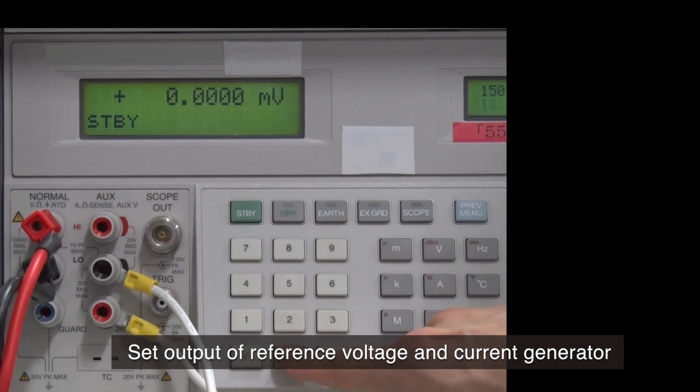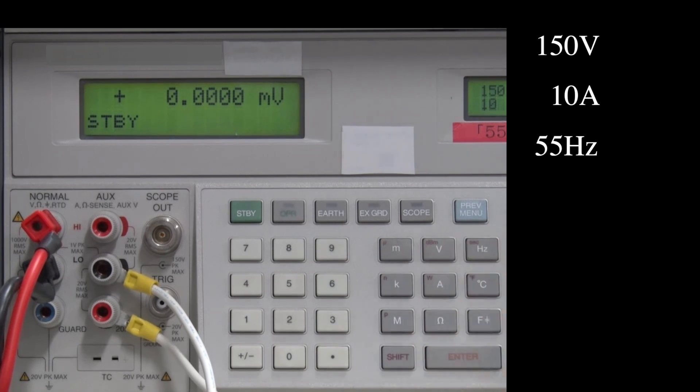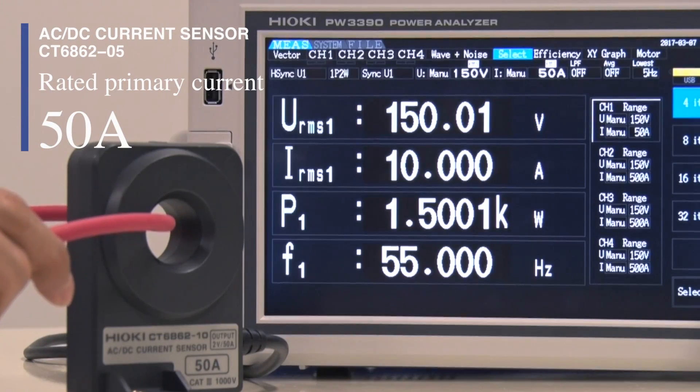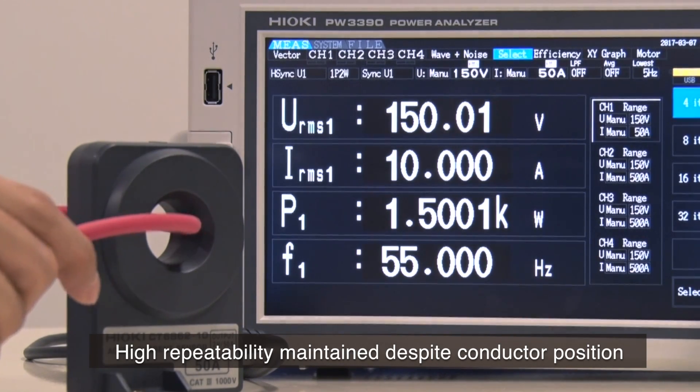First, set the reference voltage and current generator's output. As you can see, high repeatability is maintained even when you move the conductor's position within the sensor opening.